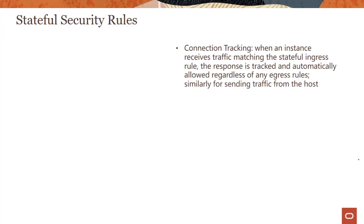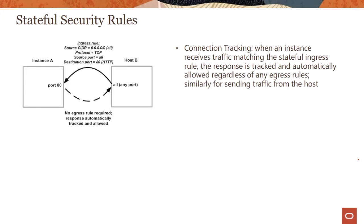There are two types of security rules: stateful and stateless. Stateful means that if an instance receives traffic matching a stateful ingress rule, the response is automatically tracked and allowed regardless of any egress rules, and vice versa. For example, with a stateful port 80 ingress rule — source any IP, protocol TCP, any source port, destination port 80 — the response traffic is automatically allowed. Default security list rules are always stateful. So you don't have to write a separate egress rule; the response traffic is always allowed.